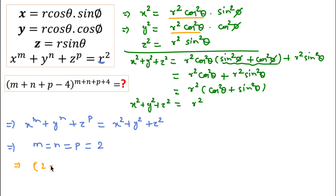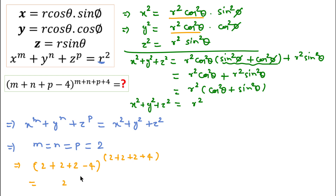Putting the value of m, n, and p, we get 2 plus 2 plus 2 plus 2, minus 4, to the power of 2 plus 2 plus 2 plus 4, which equals 6 minus 4, that is 2 to the power 10, which equals 1024. So 1024 is the required answer for this question.